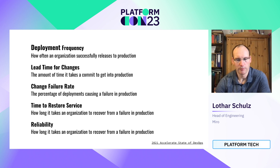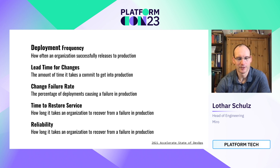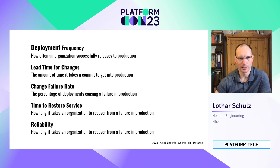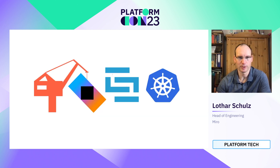In 2021, a fifth parameter was added: reliability. So overall, those five are deployment frequency, lead time for changes, change failure rate, time to restore service, and reliability. Deployment frequency is an important and key metric, and this is what I try to show how to potentially increase.